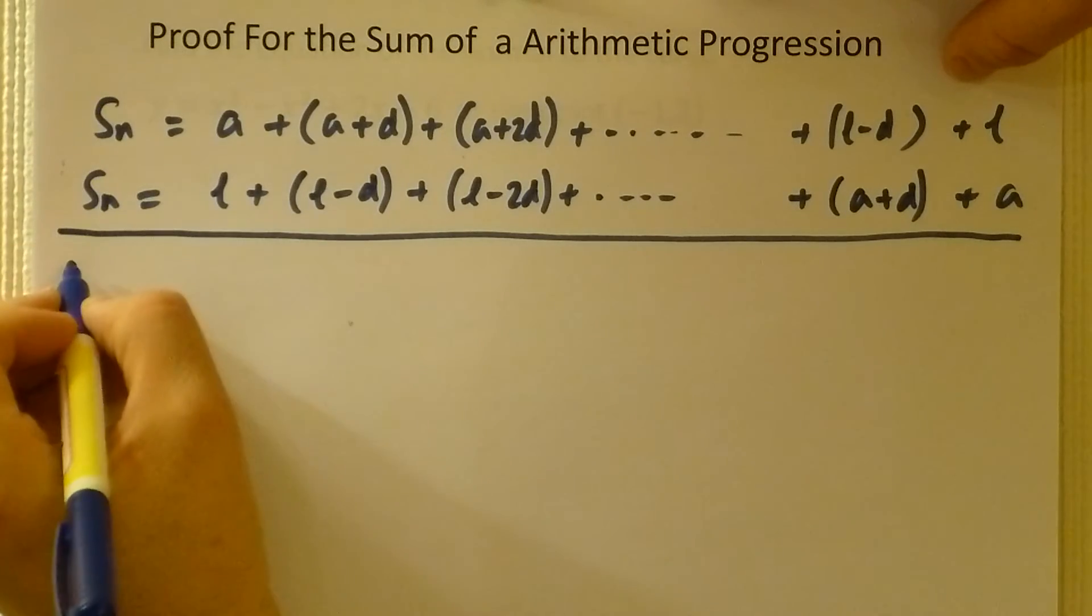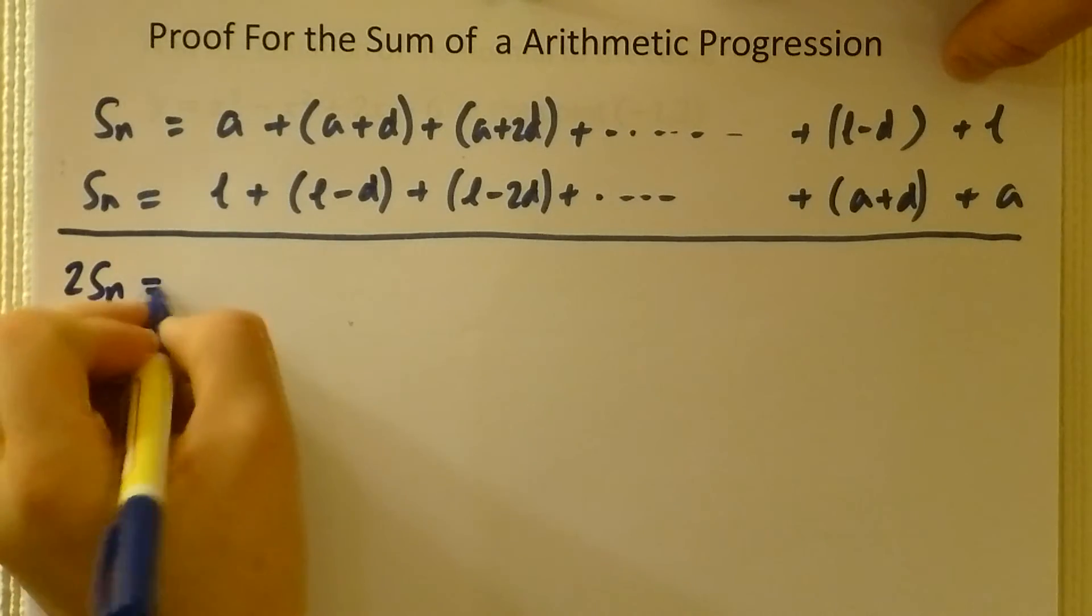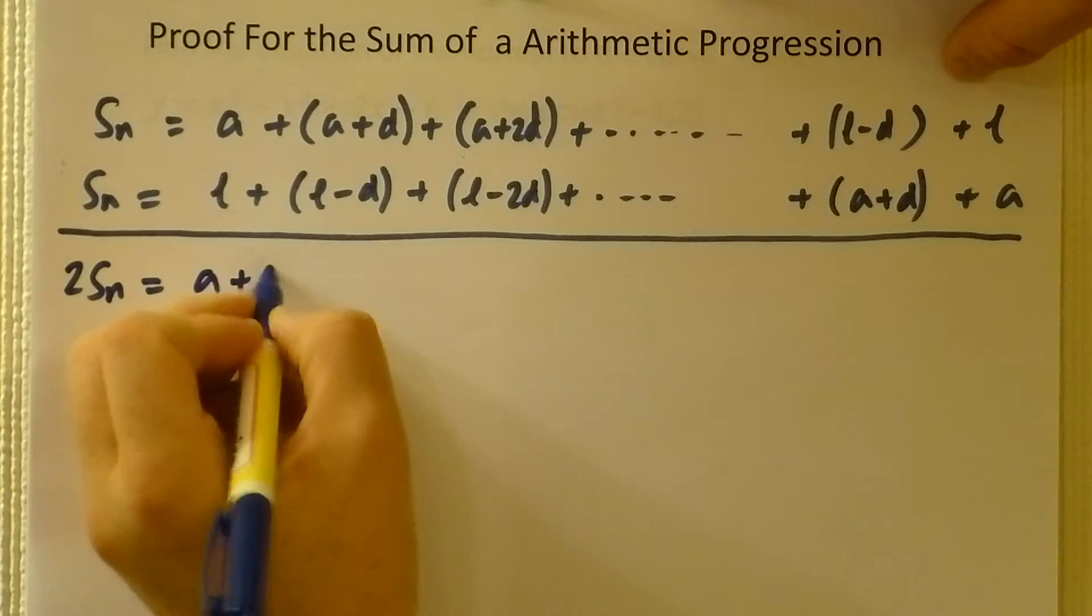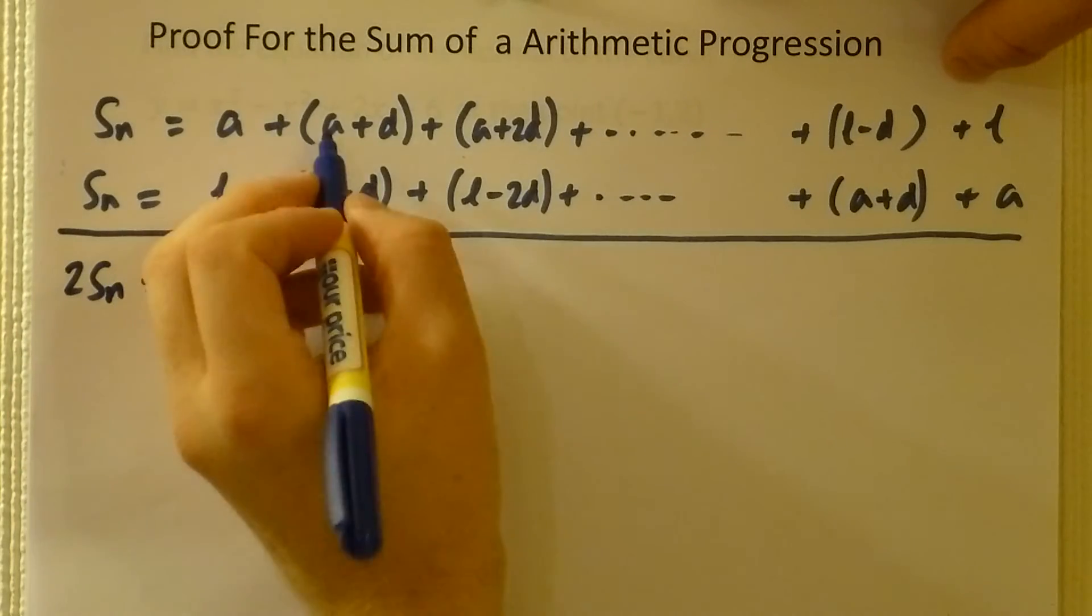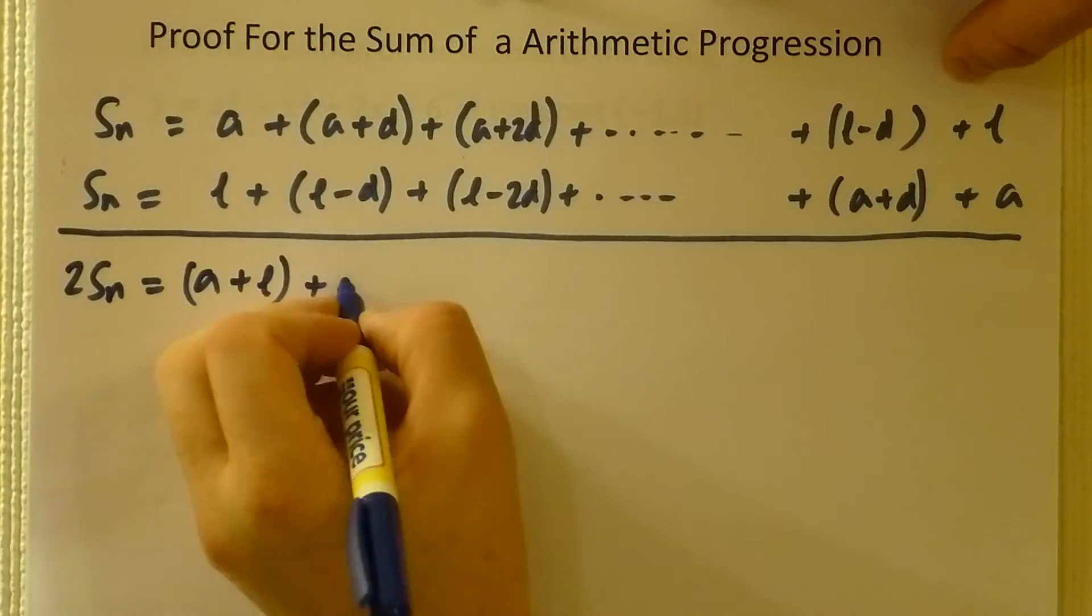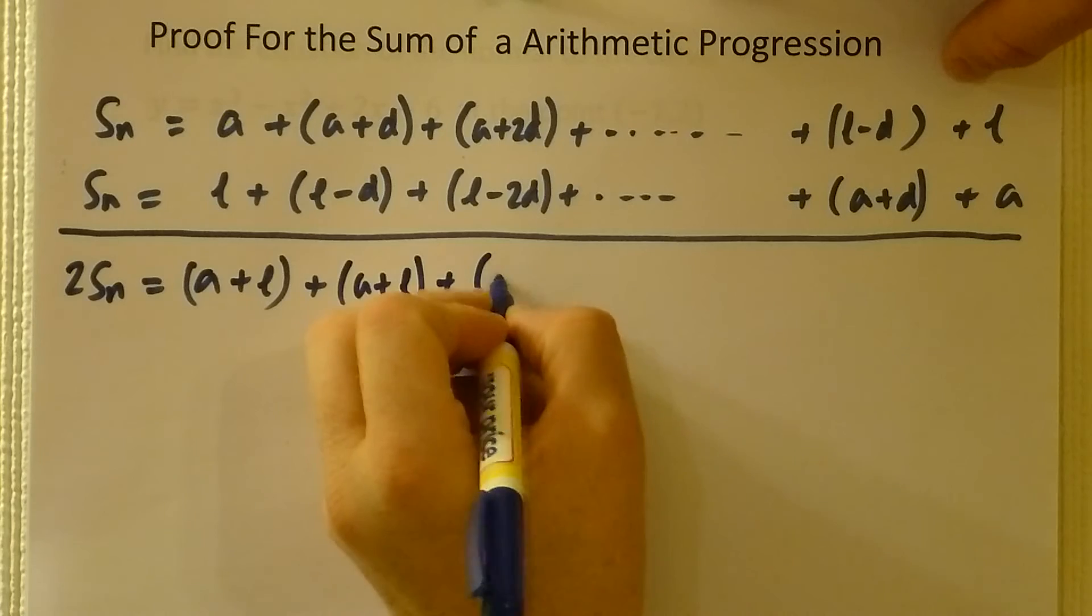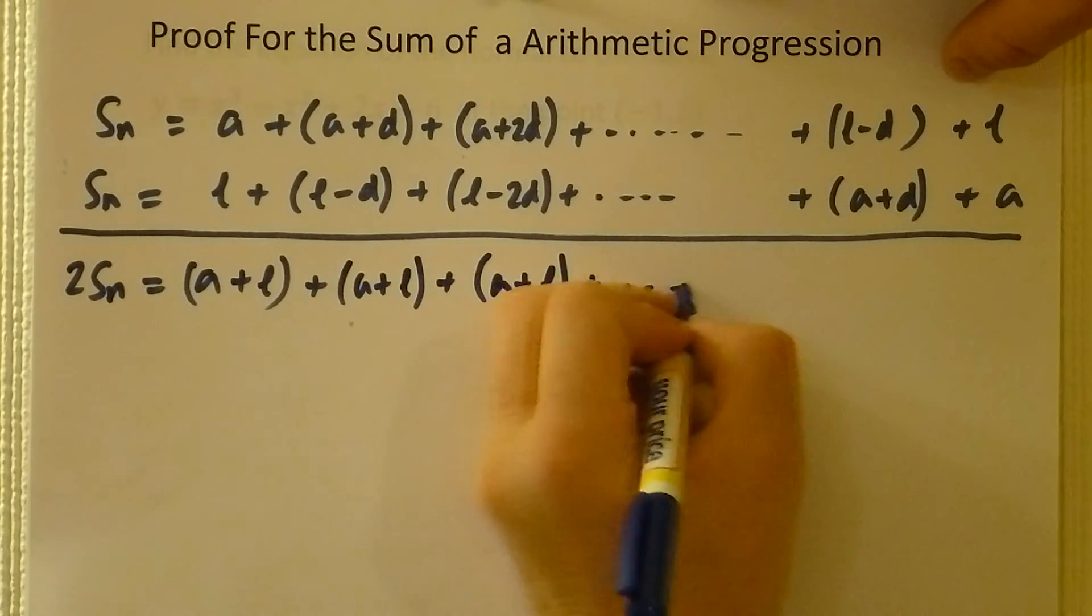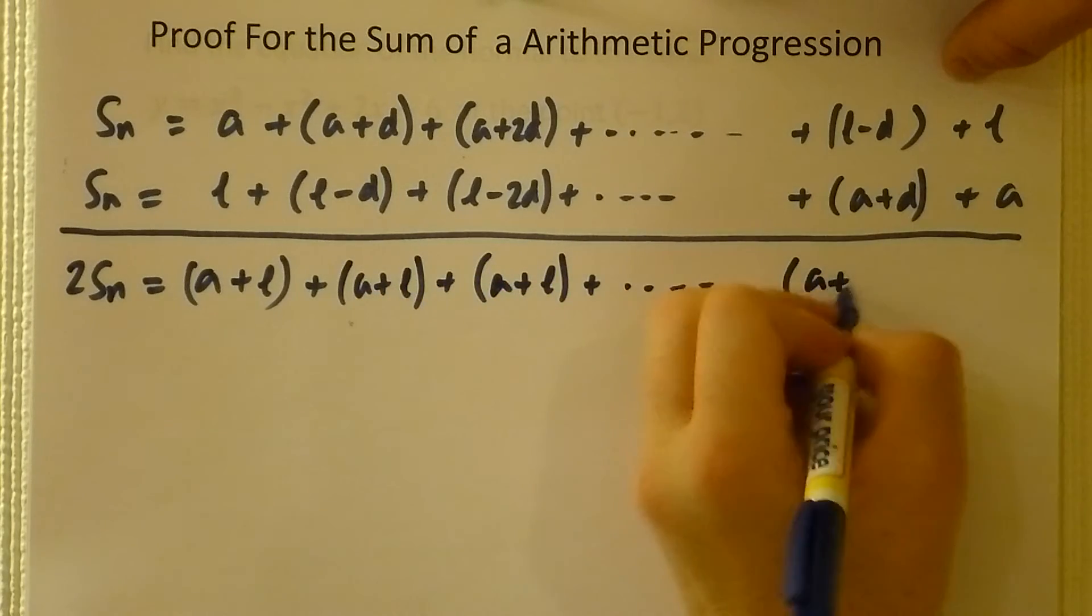If I add the two sums together, I get twice the sum: a plus l, plus a plus d, plus l minus d. The d's cancel, leaving us with a plus l. The same is true there, and that would be true all the way through.